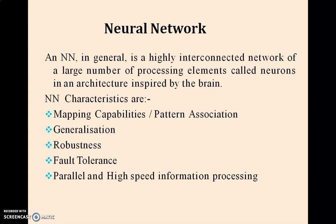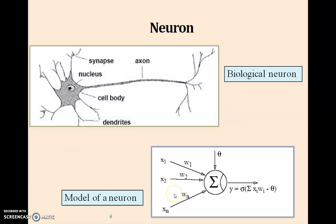Neural networks are generally highly interconnected networks of a large number of processing elements called neurons that are inspired by the human brain. Neural network characteristics are mapping capability, pattern association, generalization, robustness, fault tolerance, and parallel and high-speed information processing.